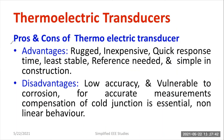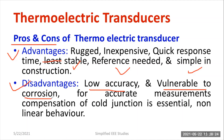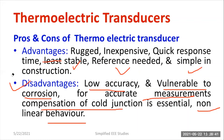Regarding advantages and disadvantages: advantages include rugged construction, it is cheap, the response time is very fast, it shows high stability for a certain range, and it is simple in construction. Drawbacks include low accuracy, as the cold junction requires calibration and compensation. It is vulnerable to corrosion, requiring stainless steel which is expensive. Temperature compensation for the cold junction is also expensive but essential — otherwise you may get wrong readings. There is also non-linear behavior for certain ranges.